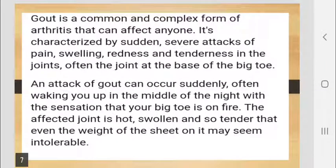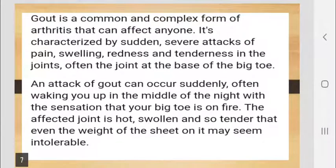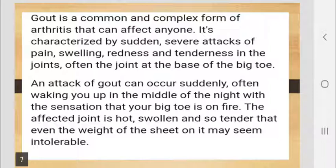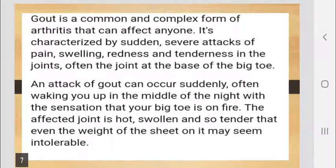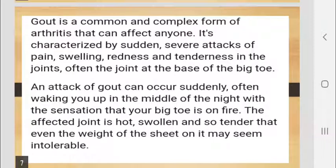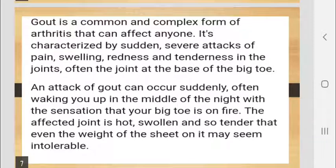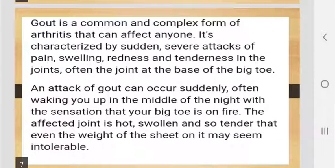Gout is the most common and complex form of arthritis that can affect anyone. It is characterized by sudden, severe attacks of pain, swelling, redness, and tenderness in a joint — often at the base of the big toe. An attack of gout can occur suddenly, often waking you up in the middle of the night with the sensation that your big toe is on fire. The affected joint is hot, swollen, and so tender that even the weight of a sheet on it may seem intolerable.